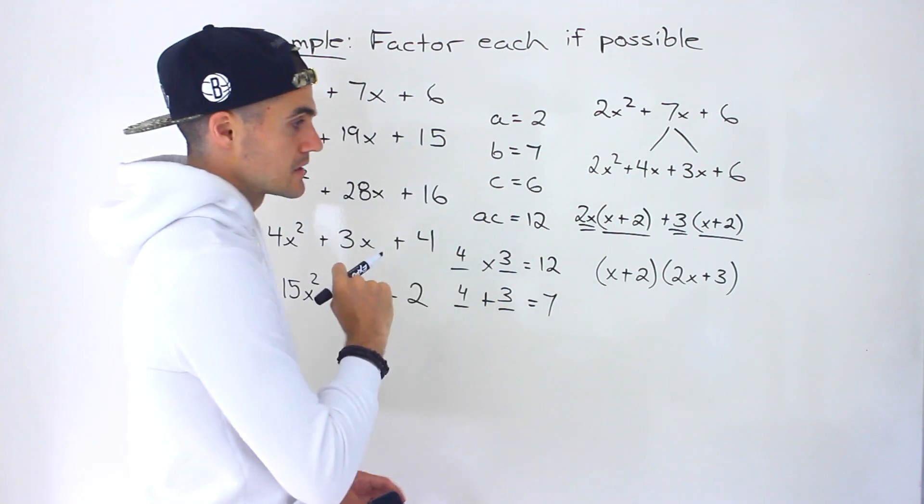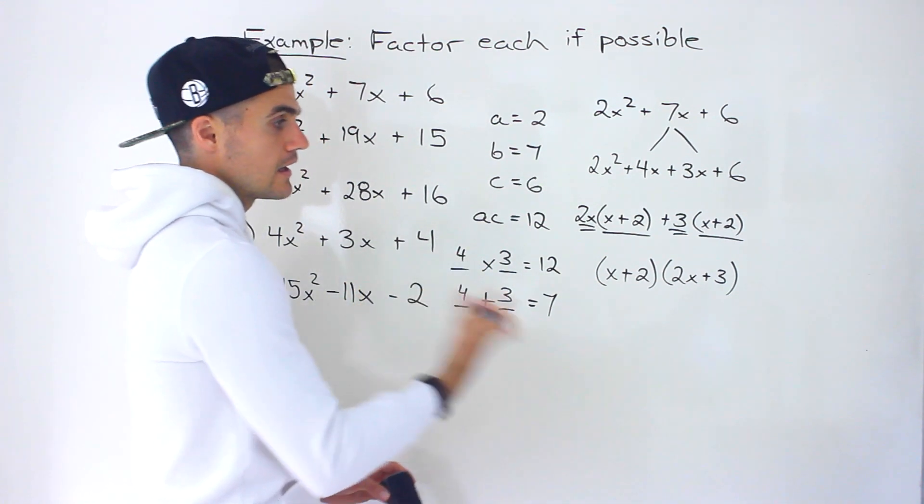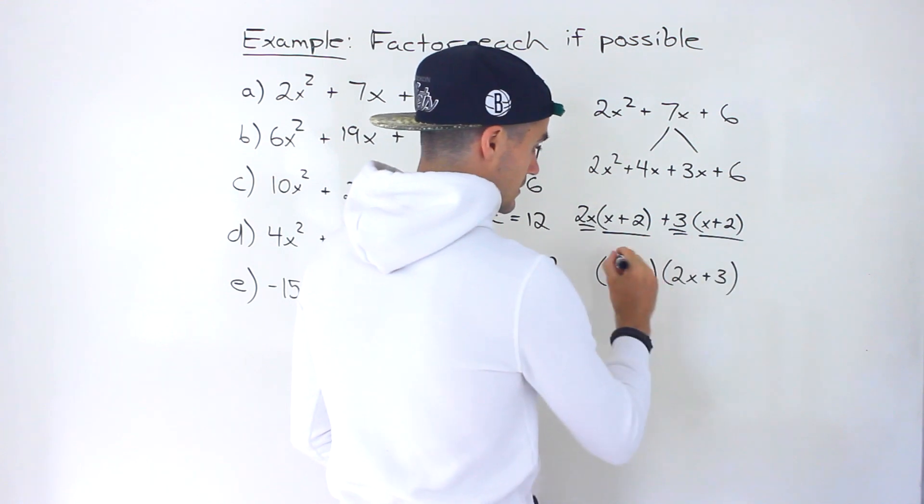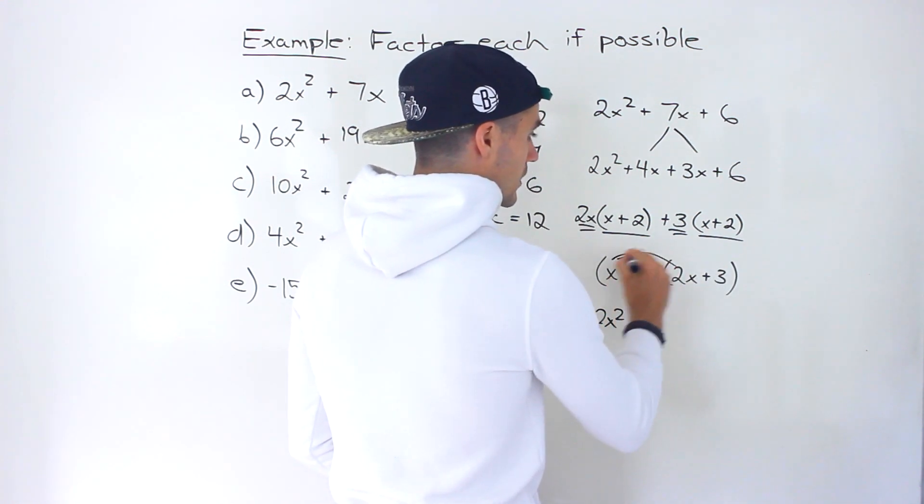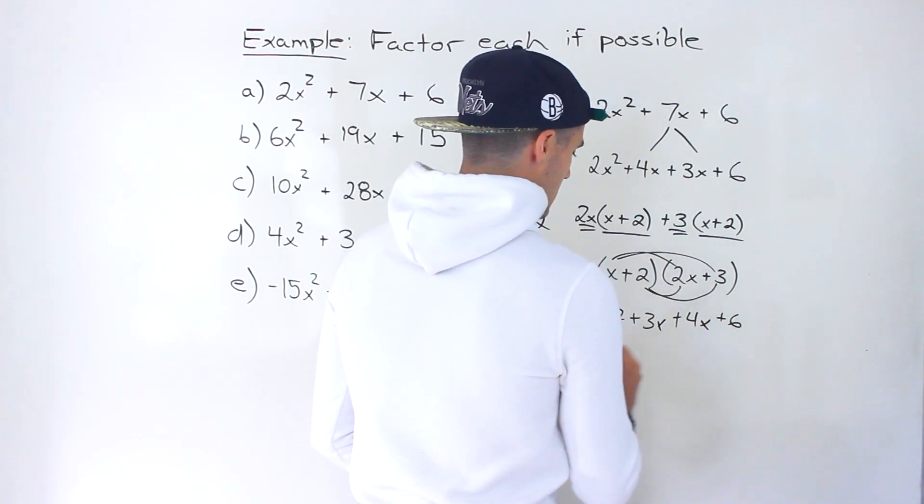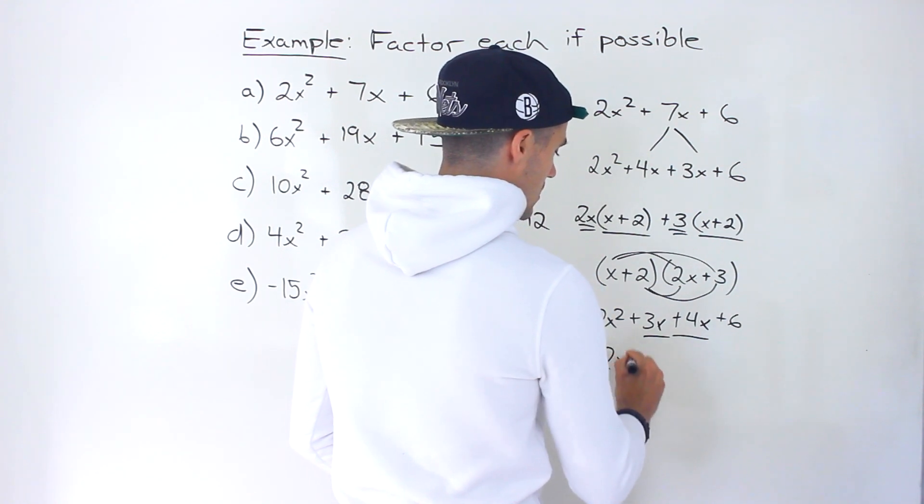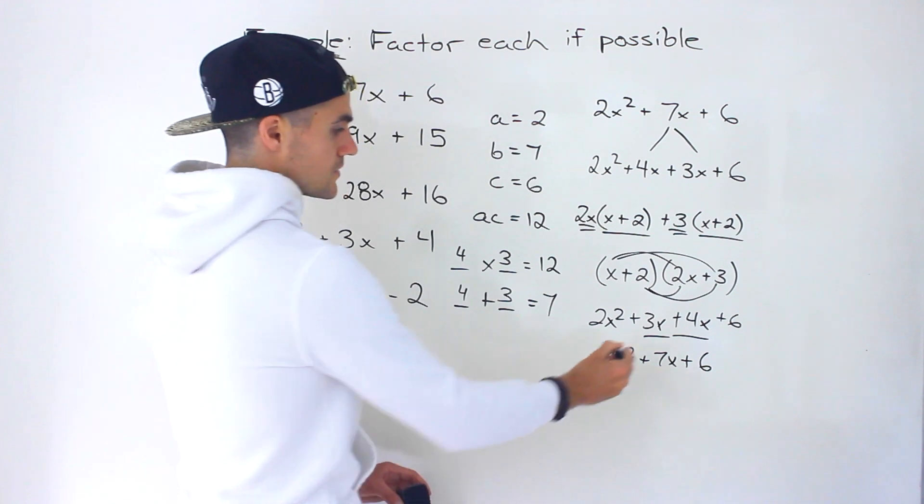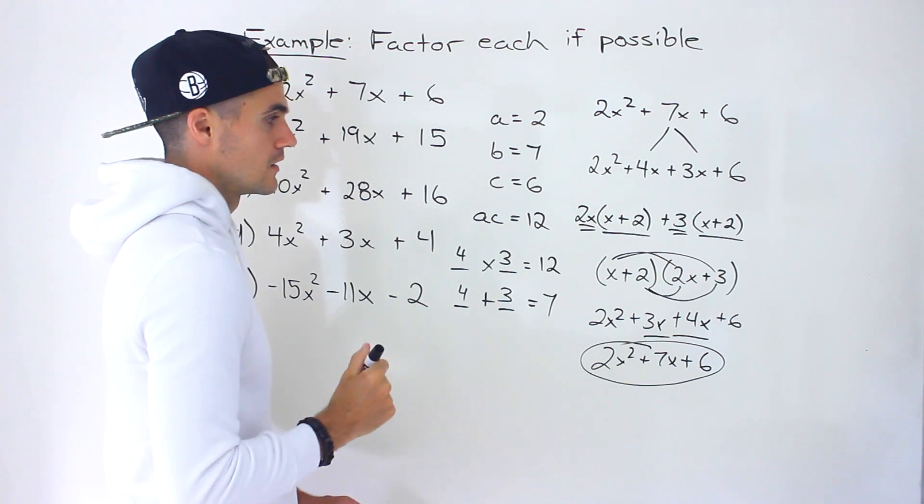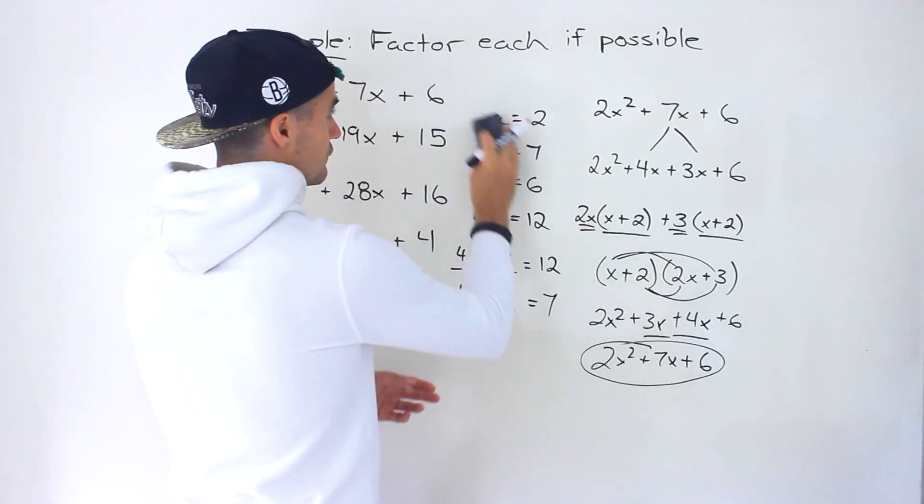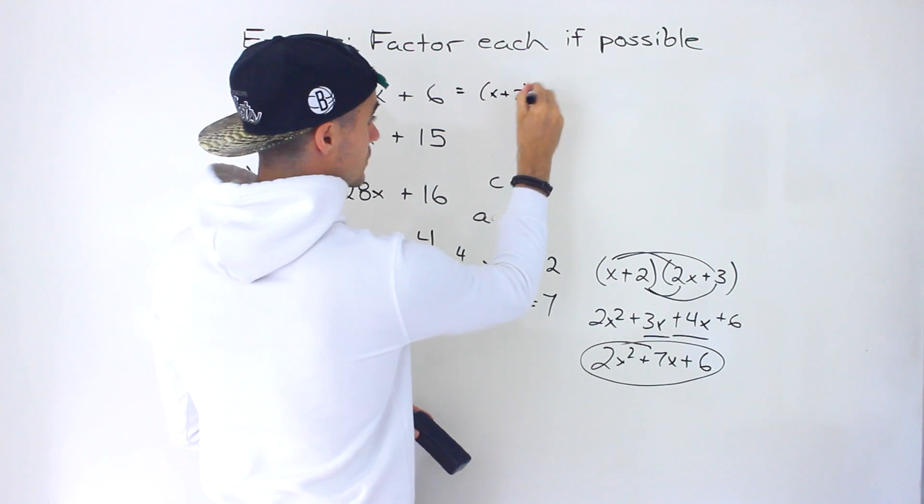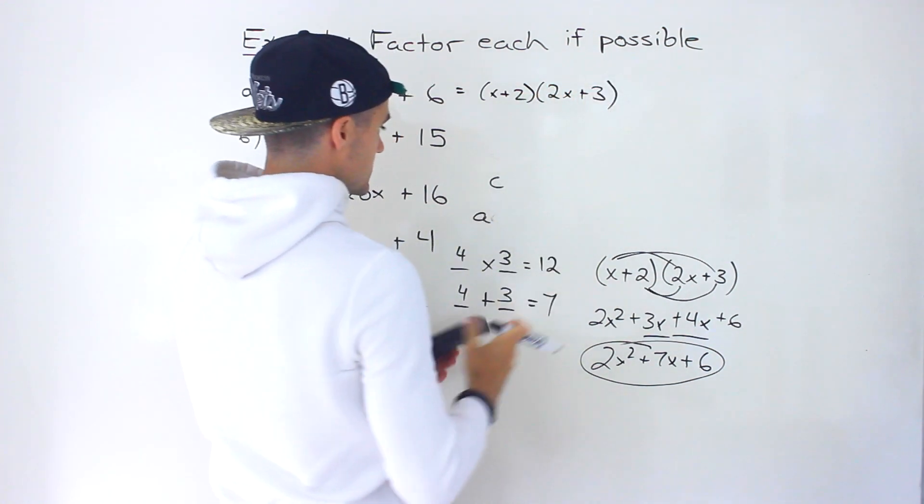Same exact process as before. For all of these, I'll do a quick check with this one. If you want to check your answer, you could just expand this. Notice 2x times x gives us 2x², 3x, 4x, 6, and notice the like terms there would net out to 7x. This and the original expression are the exact same thing. That is the fully factored form right there for part a: (x + 2)(2x + 3).